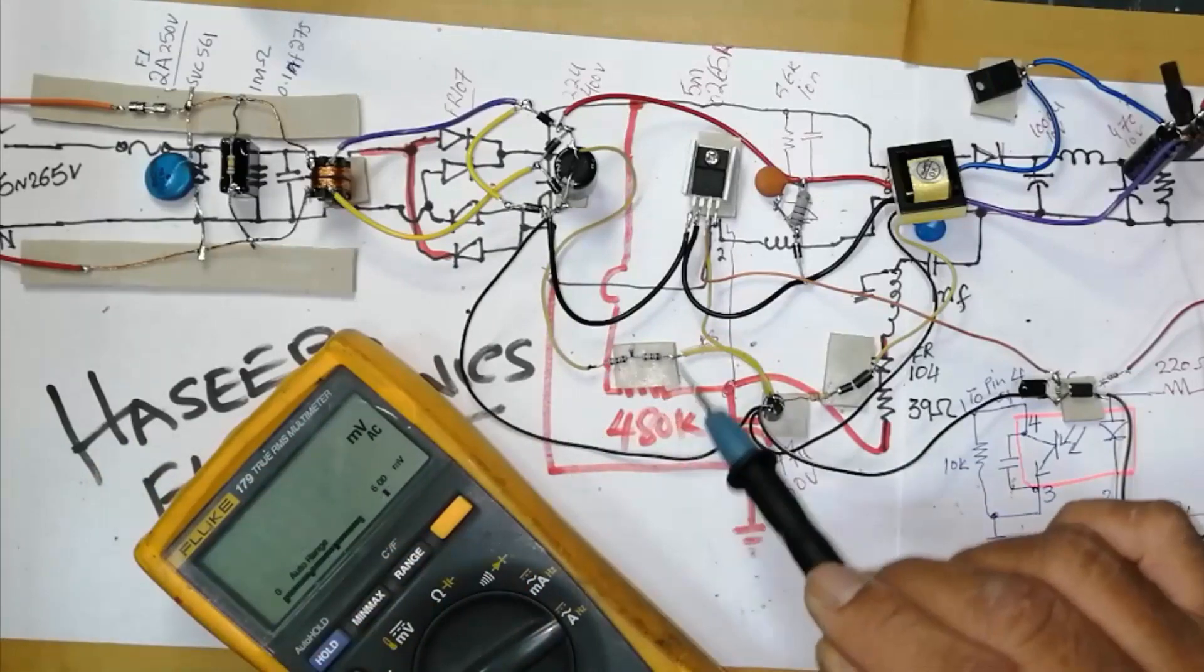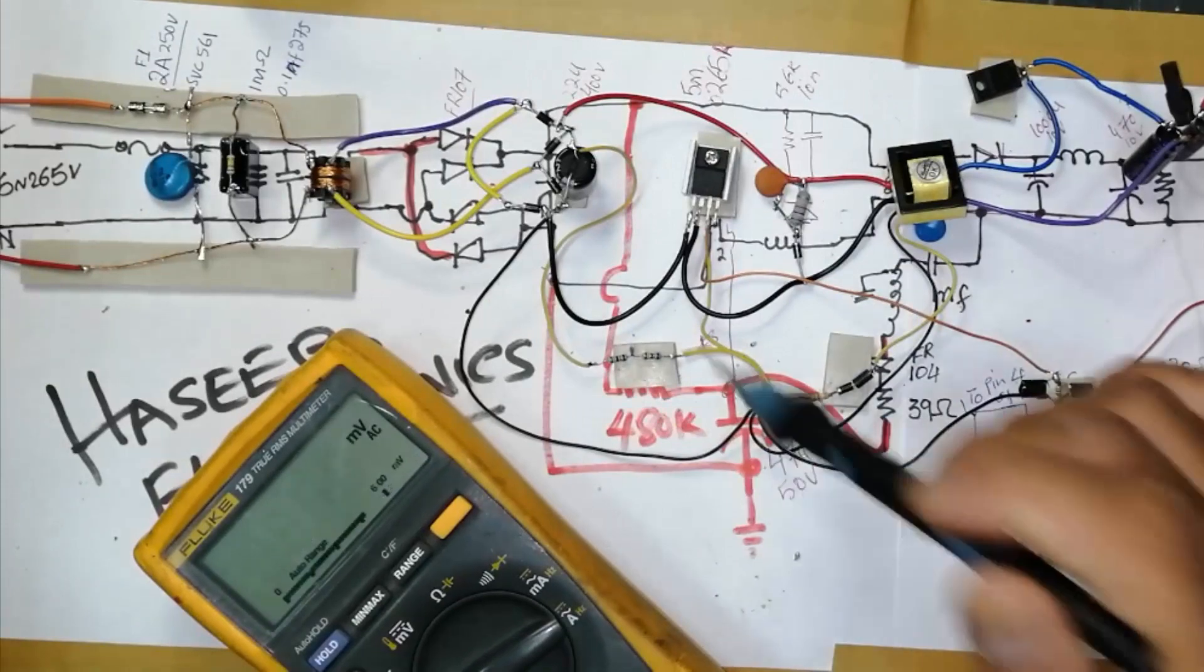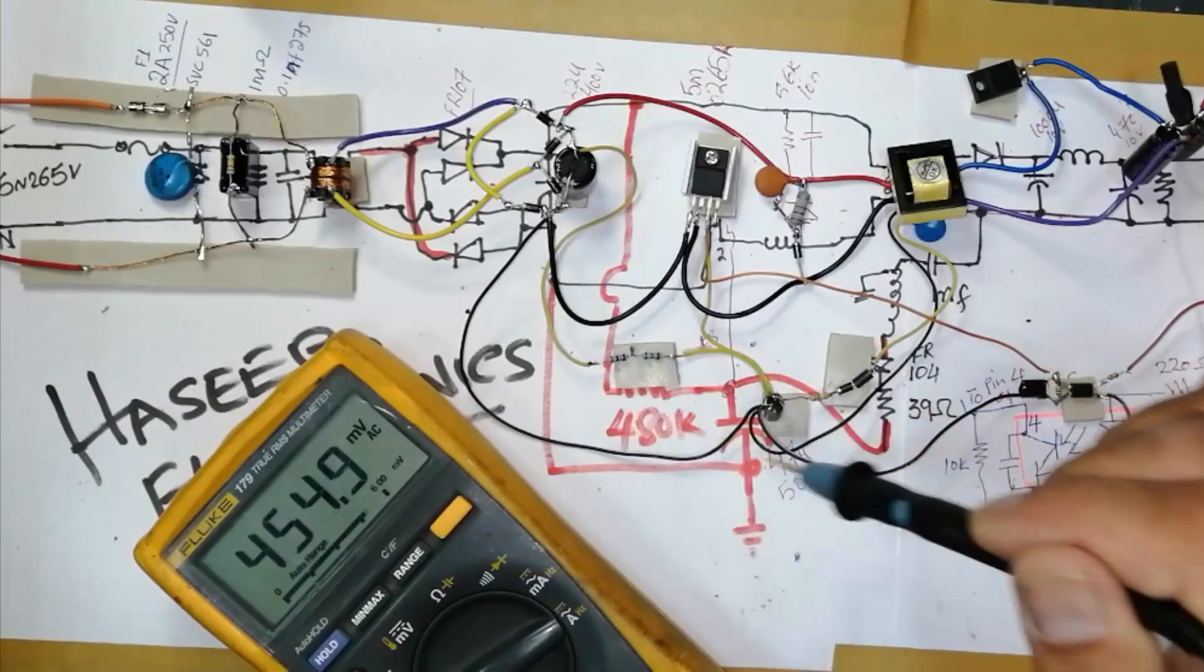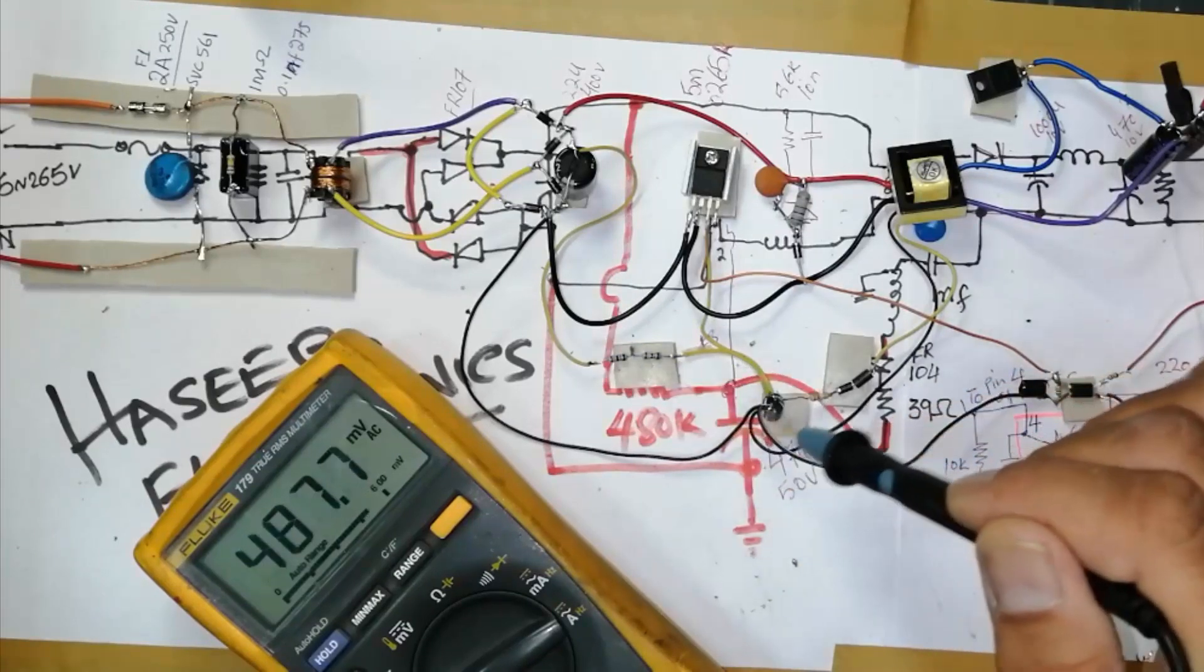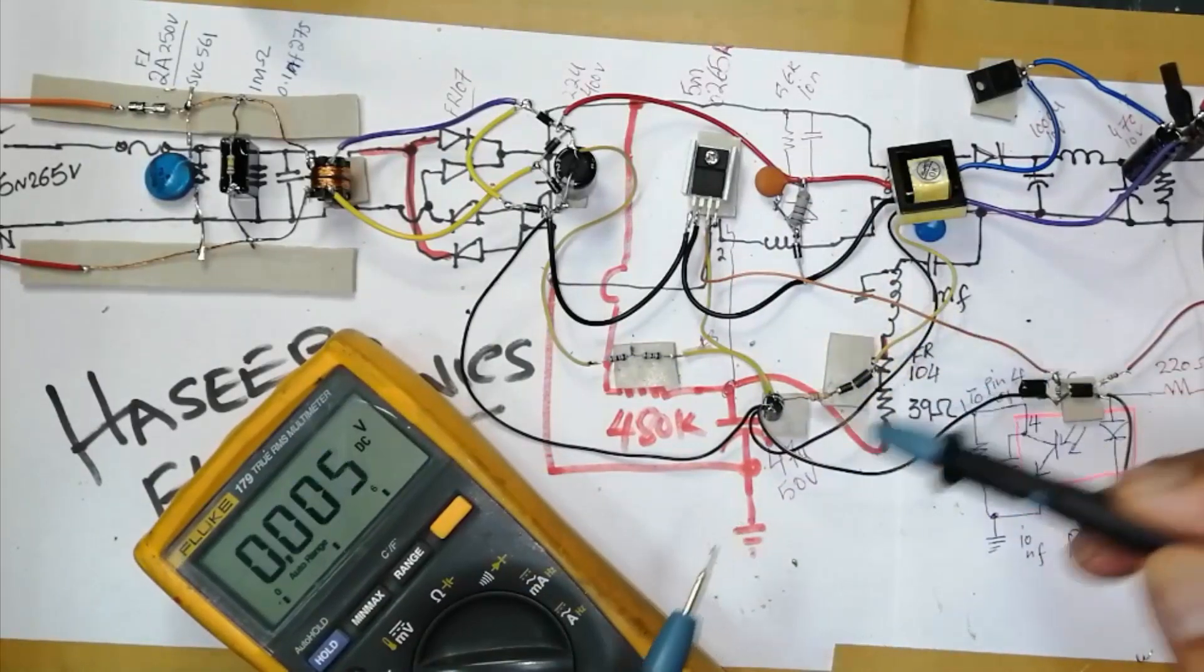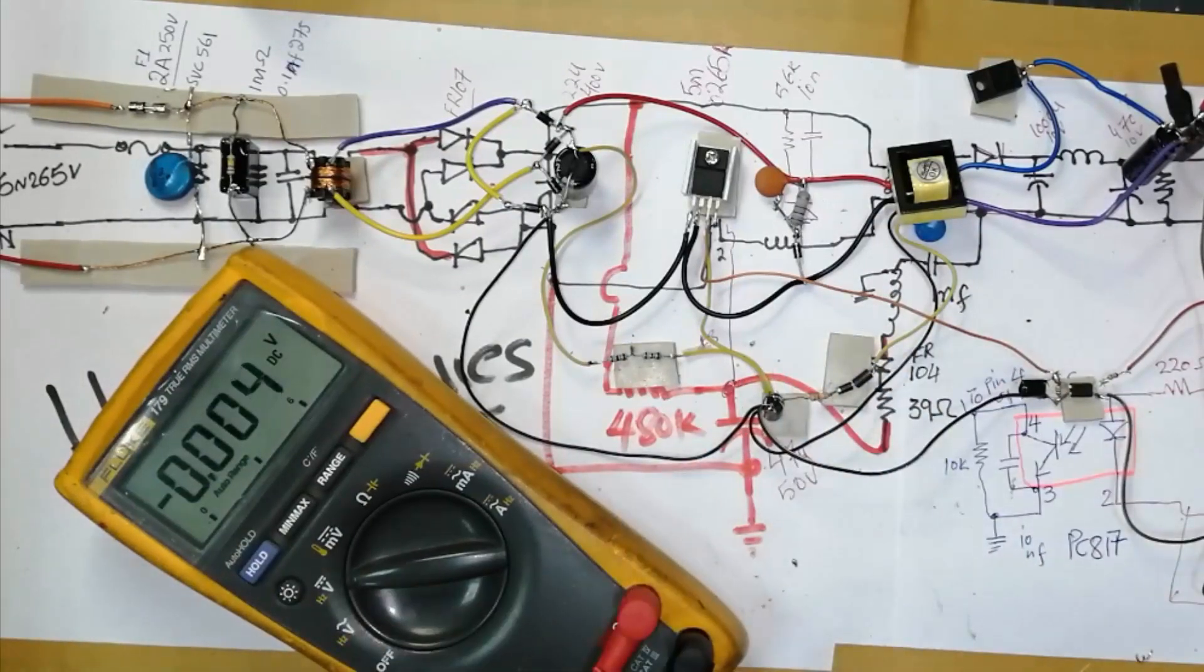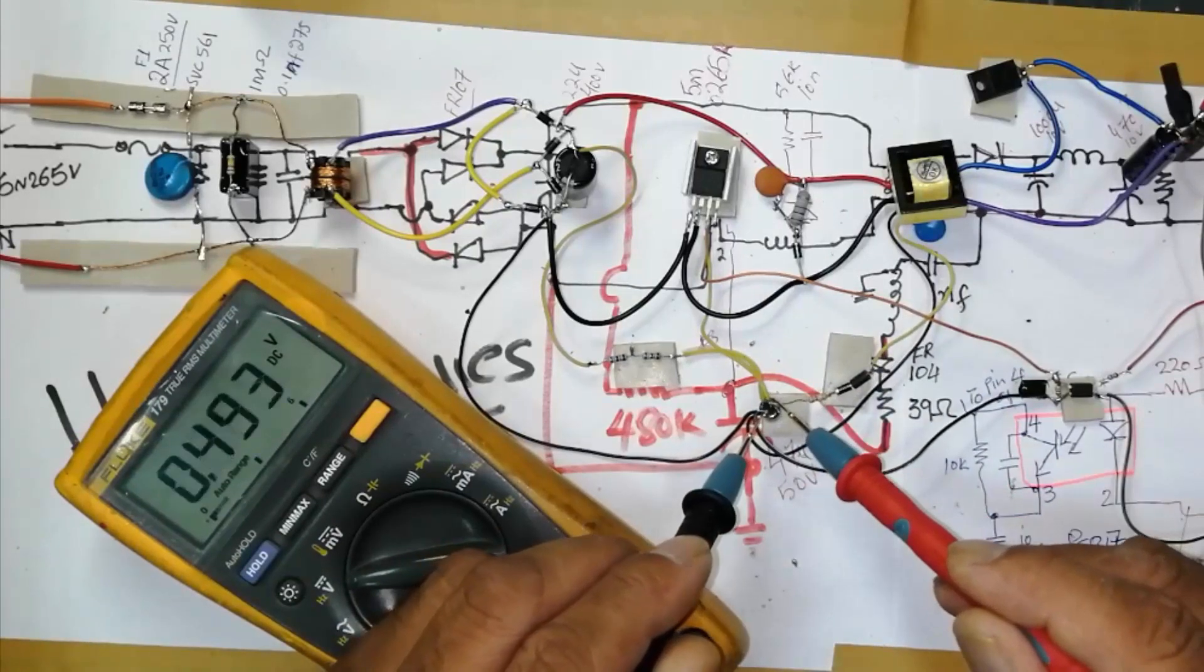After that I took the rectified voltage from 480k resistor. This voltage is for soft start. This resistor initially will apply voltage to this capacitor, and this capacitor will apply voltage to pin number 3 of this IC. What is the voltage level? DC voltage, and this voltage is very important for switching. It is 9.78 volt.